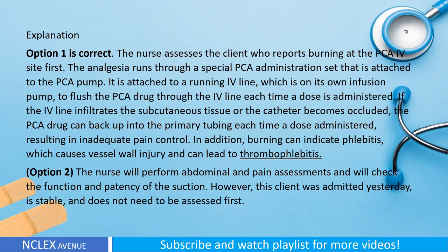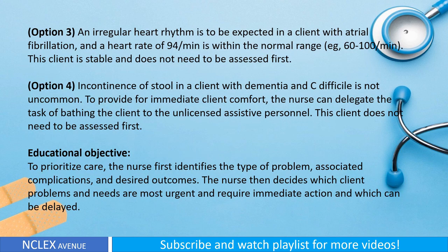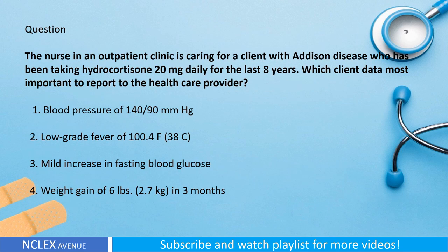Option two: The nurse will perform abdominal and pain assessments and check the function and patency of the suction; however, this client was admitted yesterday, is stable, and does not need to be assessed first. Option three: An irregular heart rhythm is expected in a client with atrial fibrillation, and a heart rate of 94 per minute is within the normal range of 60 to 100 per minute — this client is stable. Option four: Incontinence in a client with dementia and C. difficile is not uncommon; the nurse can delegate bathing to unlicensed assistive personnel. Educational objective: To prioritize care, the nurse first identifies the type of problem, associated complications, and desired outcomes, then decides which needs are most urgent.